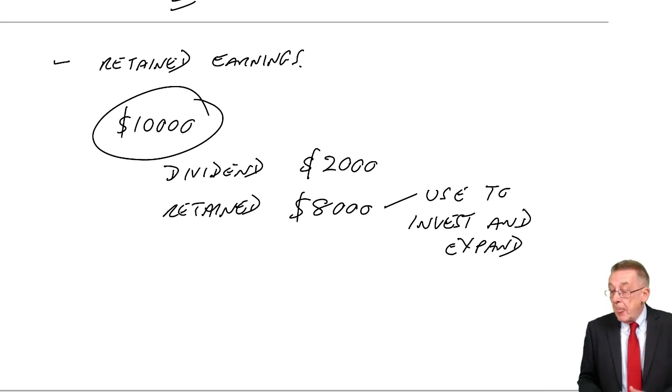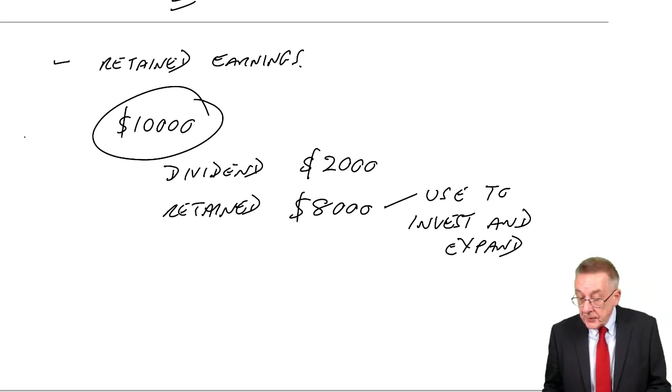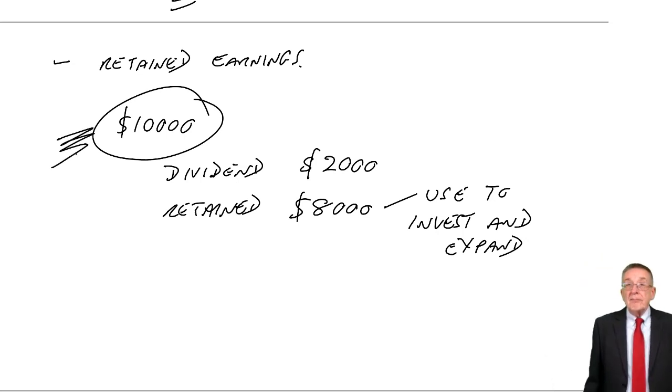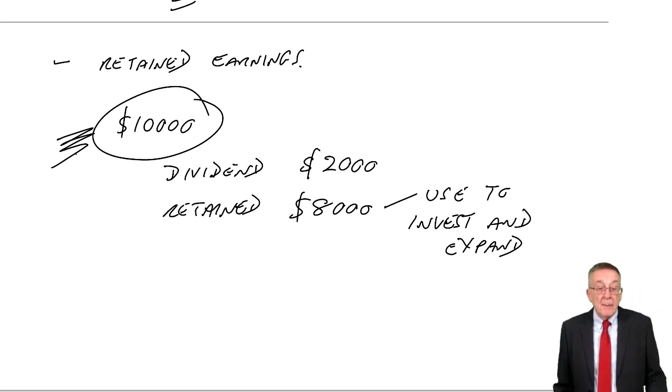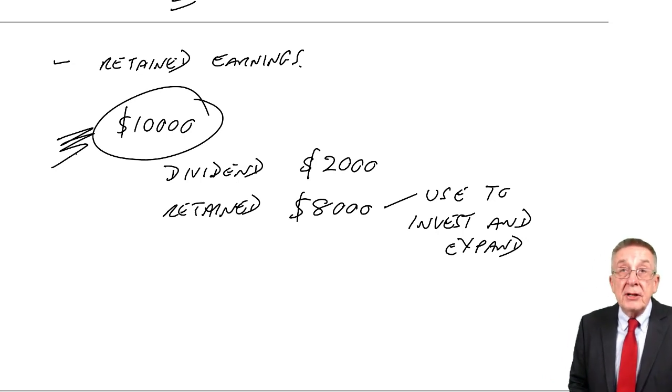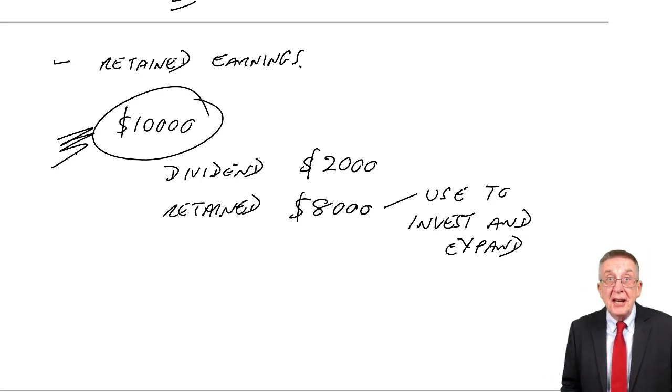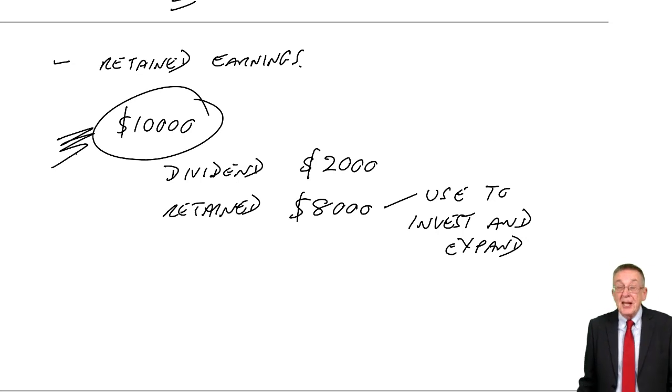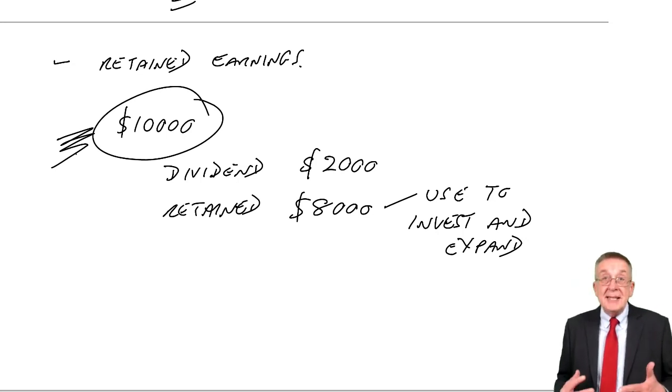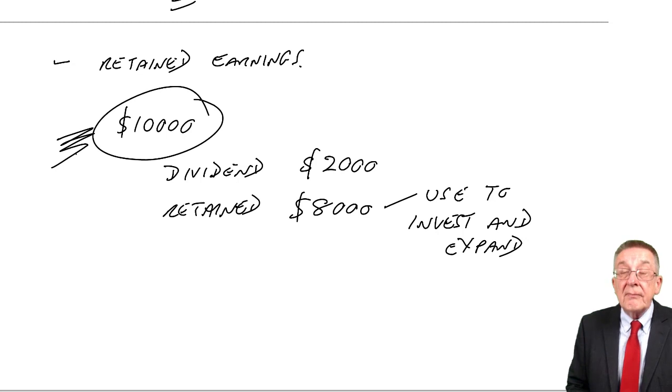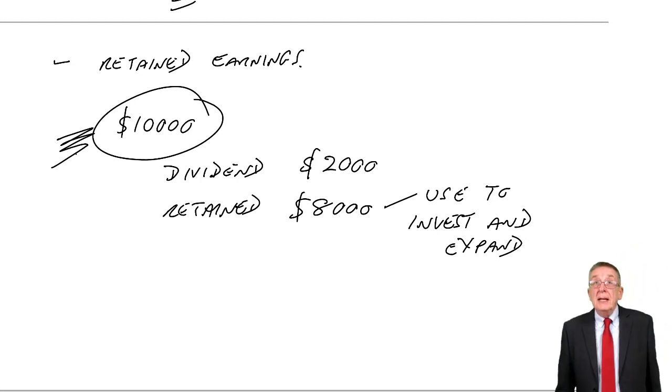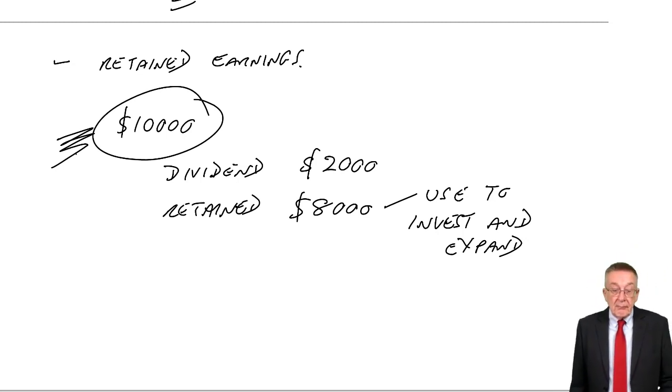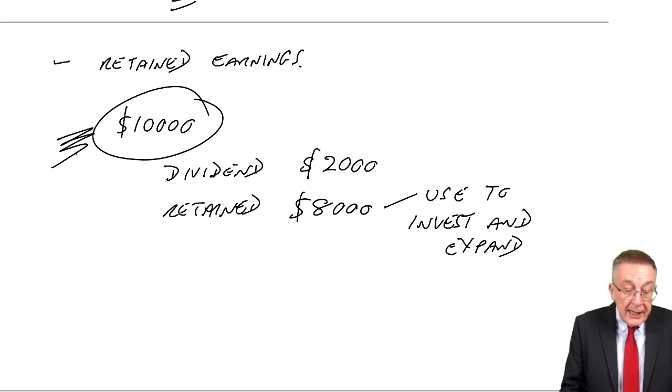So it's the most important source of finance of all. Obviously, there is a limit. If I'm only earning 10,000, the most cash available is 10,000 by paying no dividend. If we want to buy a new machine for 100,000, retained earnings aren't enough. I'm going to have to issue some more shares or take a loan. So there is a limit, obviously, but it's the first place any business will look when it needs more money, to reduce the dividend.